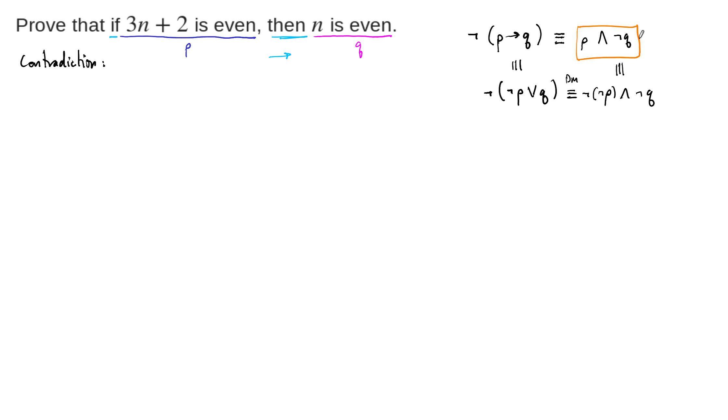So our assumption is going to be, let's just get right into the proof, actually. Our assumption is going to be that 3n plus 2 is even and n is odd. Not q, n is odd. So here's our proof. Let's suppose 3n plus 2 is even and n is odd.